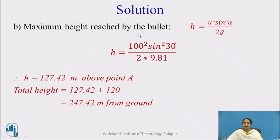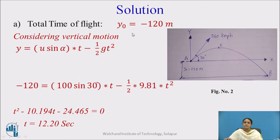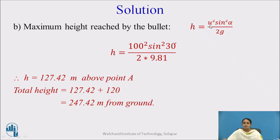Next, to find the maximum height reached by the bullet — this is point C, where the bullet reaches its peak with its initial velocity, and at this point its velocity will be 0 before it starts flowing down. The maximum height is calculated by h = u²·sin²(α) / (2g). Putting in the initial velocity of 100 m/s and gravitational force, the maximum height is 127.42 meters from point A.